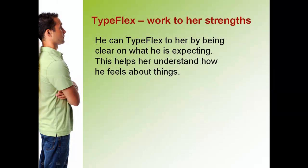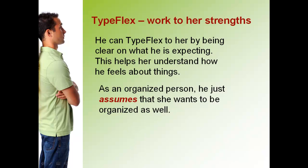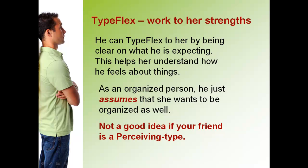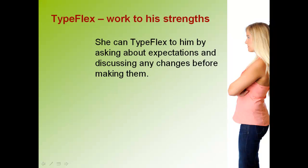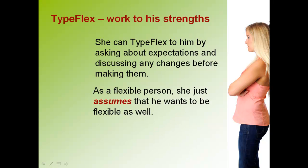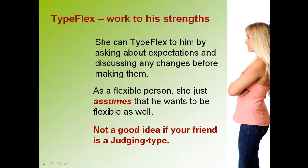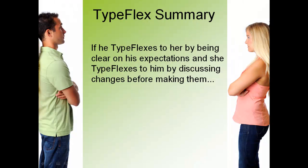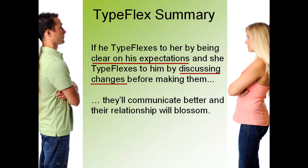Let's look at a typeflex example. He can typeflex to her by being clear on what he is expecting — this helps her understand how he feels about things. As an organized person, he just assumes she will want to be organized as well, which is not a good idea when your friend is a perceiving type. She can typeflex to him by asking about expectations and discussing any changes before making them. As a flexible person, she just assumes he wants to be flexible as well — again, not a good idea when your friend is a judging type. If he typeflexes by being clear on his expectations and she typeflexes by discussing changes before making them, they'll communicate better and their relationship can blossom.